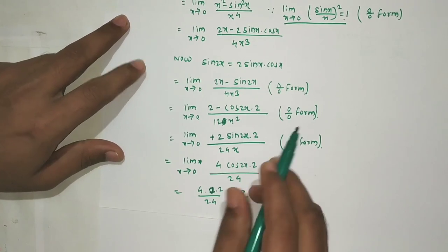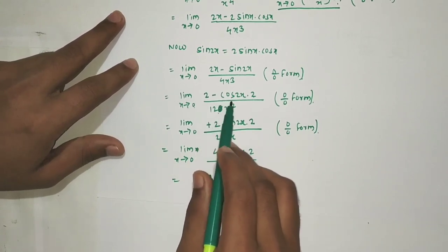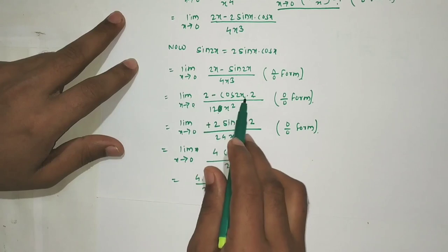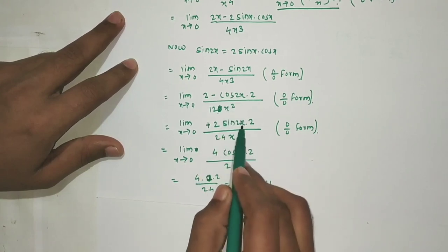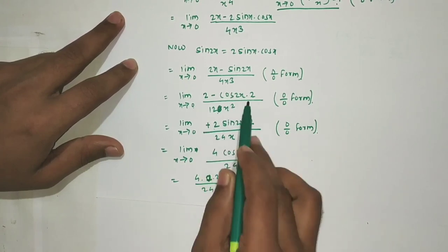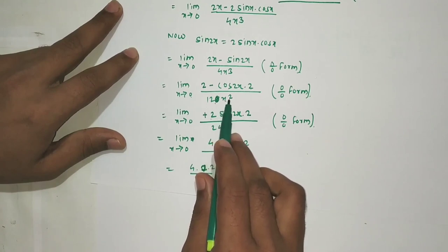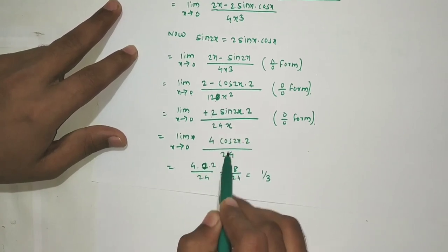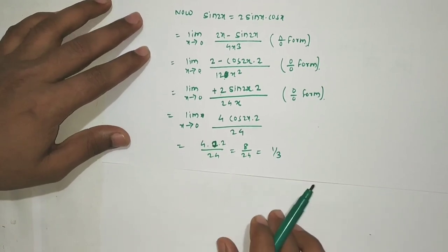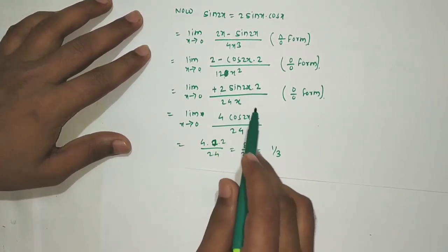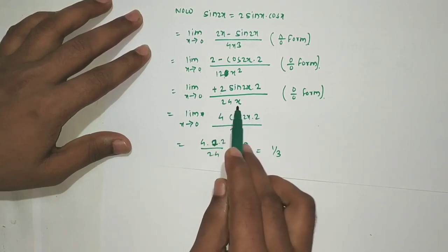Derivative of (2 - 2cos2x) is 4sin(2x), and derivative of 12x² is 24x. Putting x=0: numerator = 4sin(0) = 0, denominator = 0. Again 0/0, so one more application of L'Hôpital's rule: derivative of 4sin(2x) is 8cos(2x), and derivative of 24x is 24.